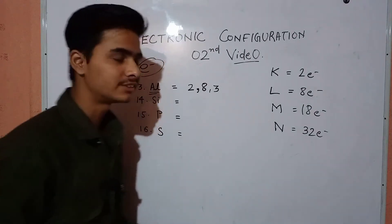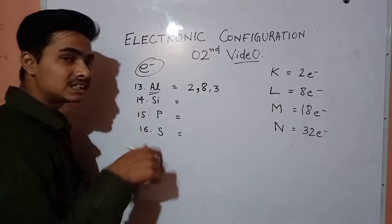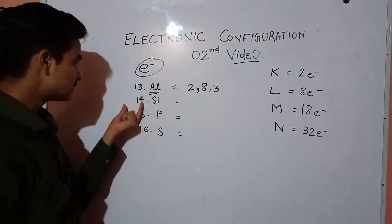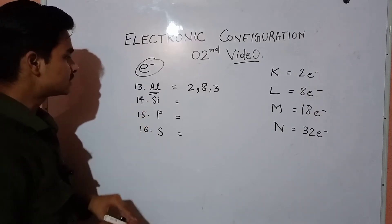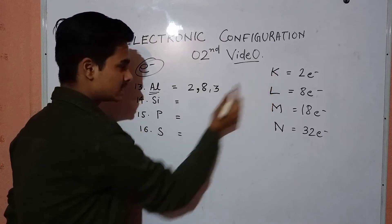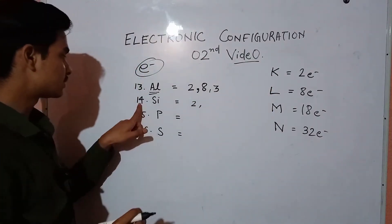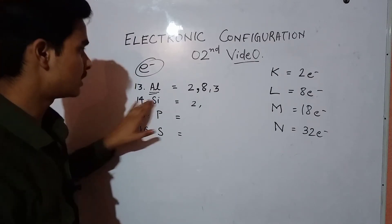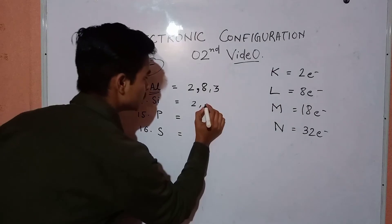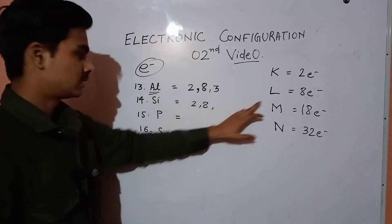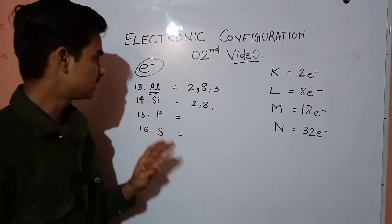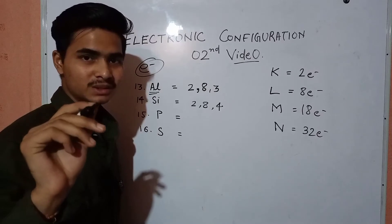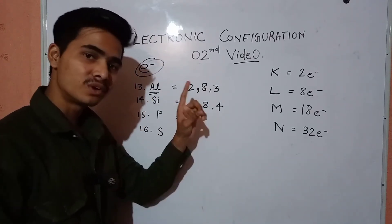Now it's time to find the electronic configuration of silicon. Silicon has 14 electrons. The first 2 go to the K shell, then 8 go to the L shell, and the remaining 4 go to the M shell. So the electronic configuration of silicon is 2, 8, 4. Watch how this configuration will change for potassium and calcium.